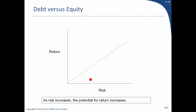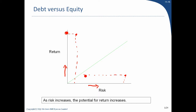As risk increases, your expected return increases. You can't expect to earn a very high return with a very low amount of risk — that would put you off the line. Alternatively, why would you take a lot of risk for a very low return? Investors want the most amount of return with the least amount of risk. That makes sense.